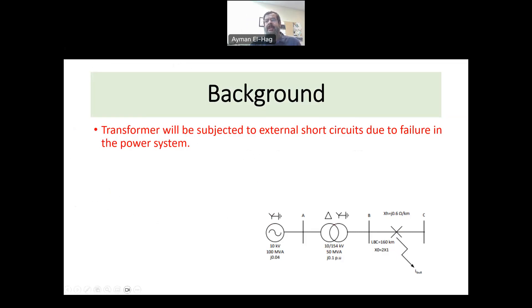To start with, power systems are subjected to faults, short circuits, could be symmetrical faults meaning three line to ground, or asymmetrical faults like single line to ground, line to line to ground, or line to line. So these faults happen at different positions in the power systems, and you have the transformers there.